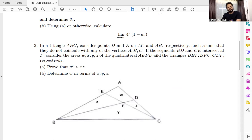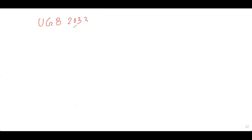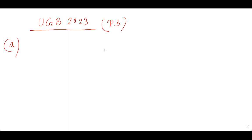I'll be approaching this problem in a very basic manner, just figuring out the areas and simplifying the inequality. This is UGB 2023, problem number three, part A. Let's draw the diagram — we have triangle ABC.